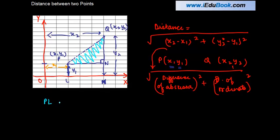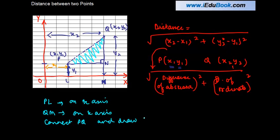PL and QM on x axis. Then connect PQ and draw PN which is perpendicular to QM. Now what we will have is PQN is a right angled triangle.